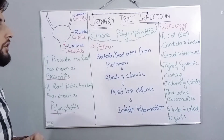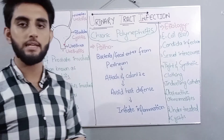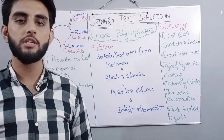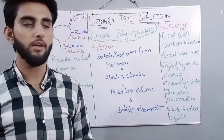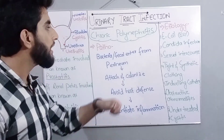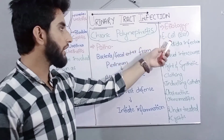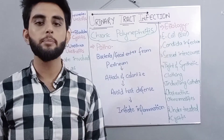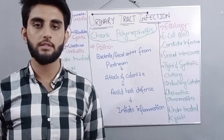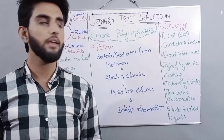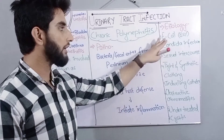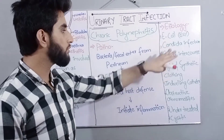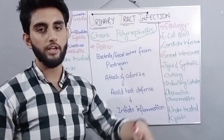Now we will see the etiology — the causes of UTI. First of all, E. coli bacteria is responsible in 80% of UTI cases. The next causative organism is Candida infection.